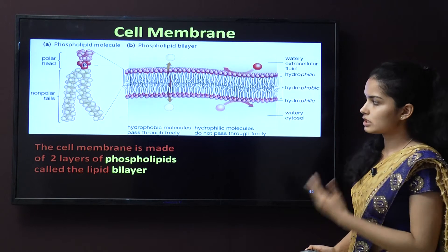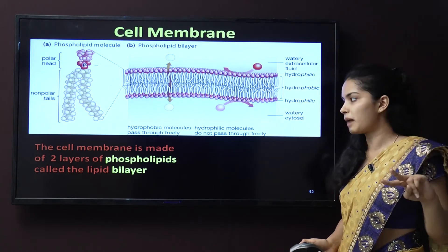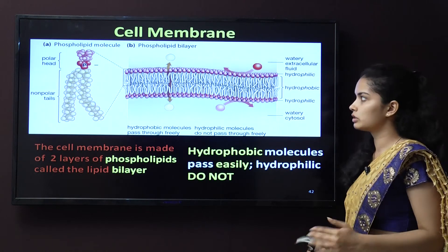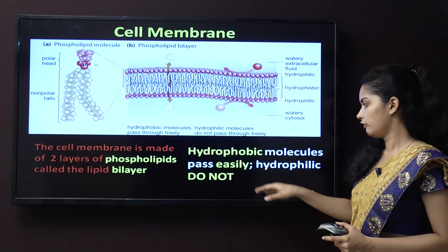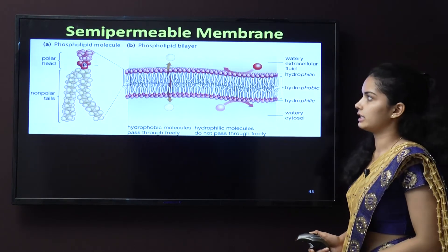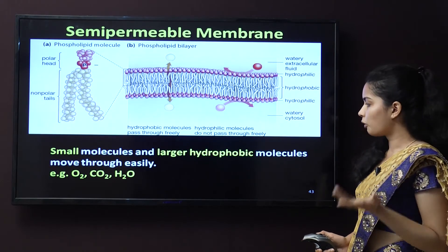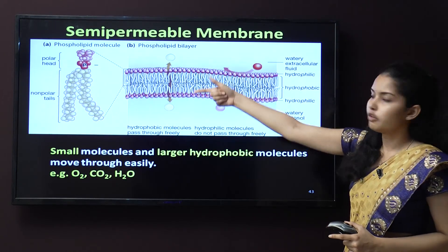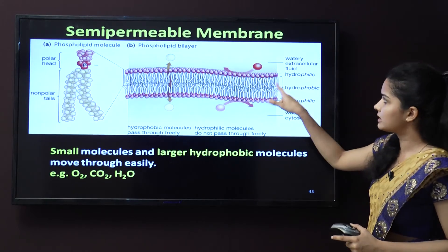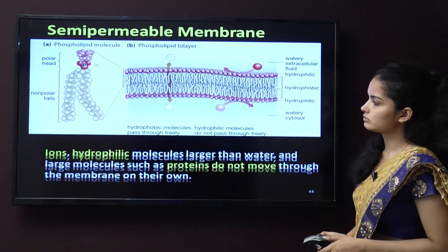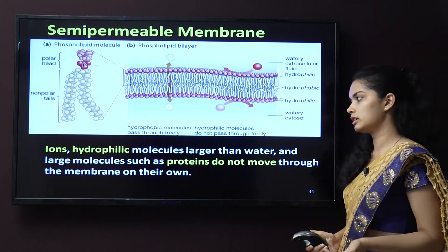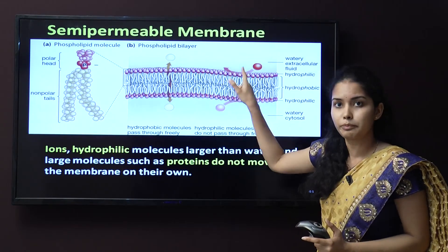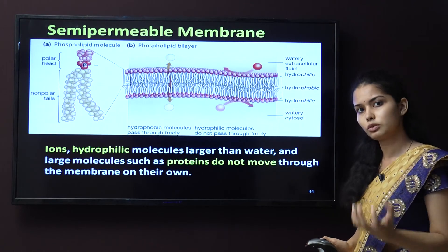The cell membrane is made up of two layers of phospholipid — it is a bilayer structure, thus known as a lipid bilayer. Hydrophobic molecules do not pass easily through it because it is made up of lipid. Hydrophilic molecules, which are water-loving, also do not pass easily. Small molecules and large hydrophobic molecules like gases — O2, CO2 — move easily through the membrane. Ions and hydrophilic molecules larger than water, and larger molecules such as proteins, do not move through the membrane on their own — they need protein channels to pass through.